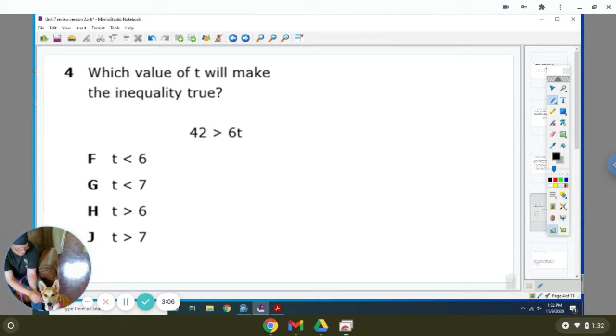Which of the value of T will make the inequality true? So we're going to draw our line. 6 is being multiplied, so we're going to do the opposite and divide 6 of both sides. So 42 divided by 6 is 7. So 7 is greater than T. Now you see all the T's are on the left side, so I need to flip this around. So I'm going to write T in my 7. You see this sign is eating the 7. So when I flip it, I've got to make sure to flip this as well. So T is less than 7. The answer is G.